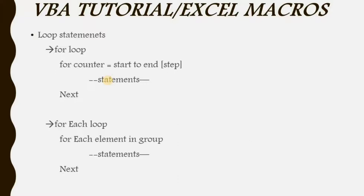Once you enter the loop body, you write whatever statements you want to execute for that particular iteration. Then followed by the Next statement. What Next does is it automatically goes back to the counter and increments it by the step value. It then checks whether the value is less than n — if so, it executes the statements again. If not, the loop breaks and whatever statement is written after the For loop gets executed.